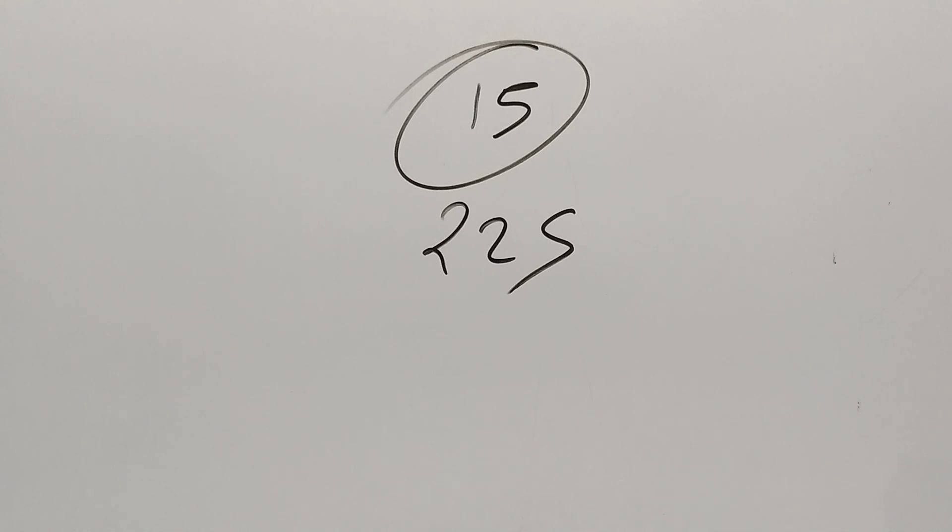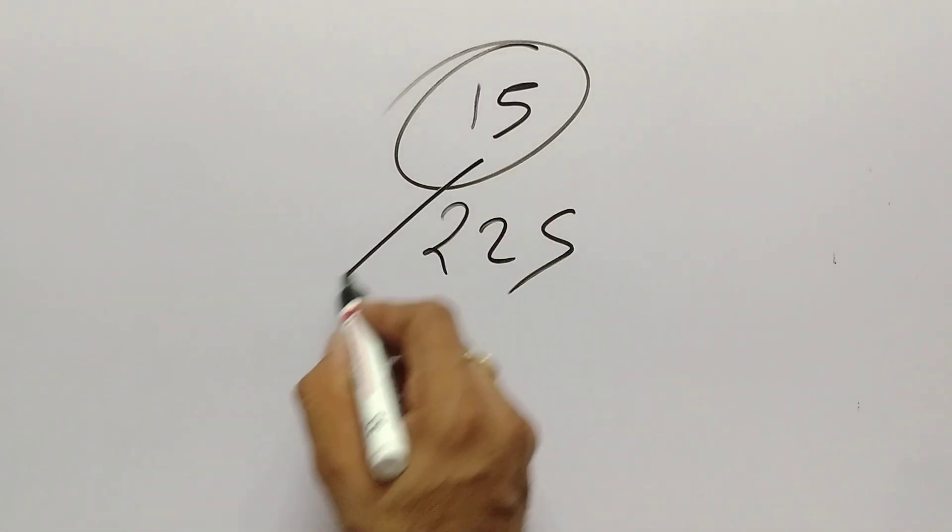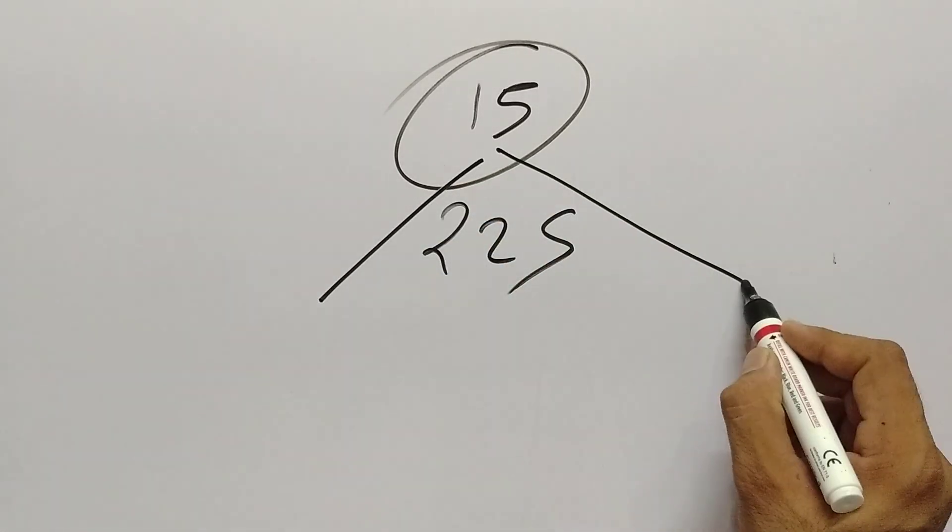One way is simple division which we already know. Second is the divisibility rule. So in this video we are going to learn the divisibility rule for 15.